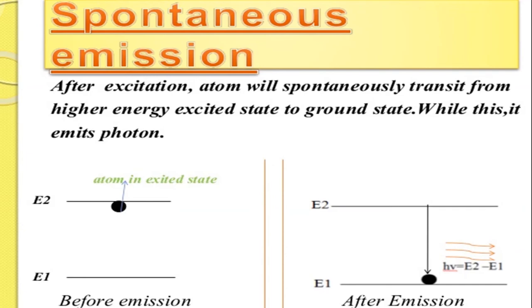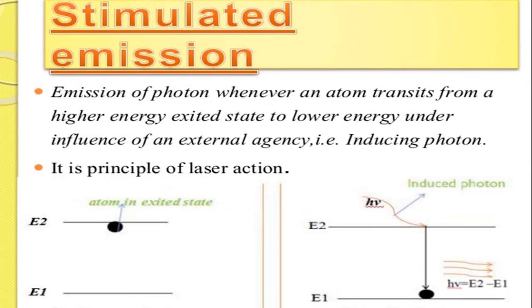The third type is stimulated emission — the emission of a photon whenever an atom transits from a high energy excited state to a low energy state under the influence of an external agency, that is, an inducing photon. So these are the three types: induced absorption, spontaneous emission, and stimulated emission.